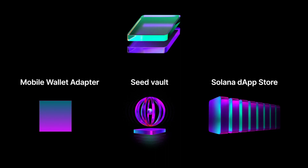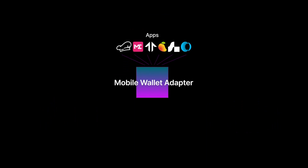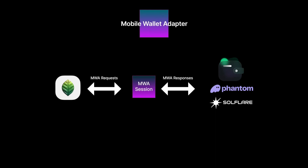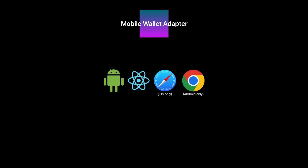The coolest one of these is the Mobile Wallet Adapter, which makes it easy for apps and wallets to communicate on mobile devices. As a Dapp developer, all you have to do is implement the SDK and your app will create MWA sessions to communicate with any wallet app on the user's phone. The SDK currently supports Android apps, React Native apps, and web apps via Safari and Chrome.